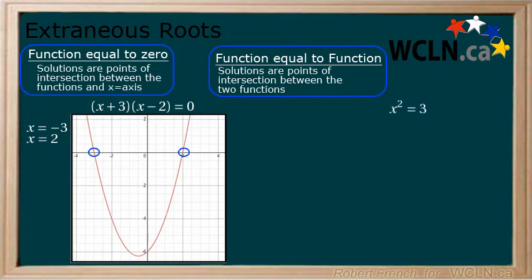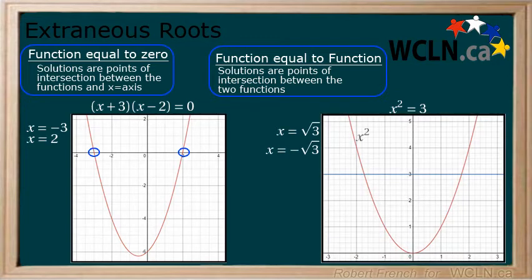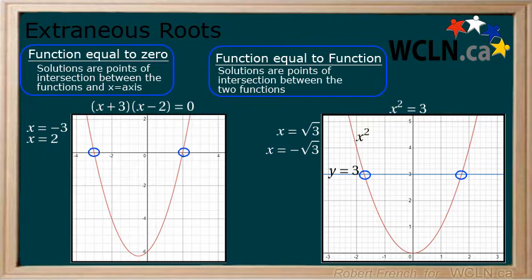Now consider x squared equals 3. This has two solutions: the square root of 3 and the negative square root of 3. We have two functions, x squared and y equals 3. The solutions to this equation are where these two functions intersect. When looking at a graph, we see that they intersect at x equals the negative square root of 3 and at x equals the square root of 3. Hopefully, being able to visualize what the solutions to equations represent will help with the understanding of extraneous roots.